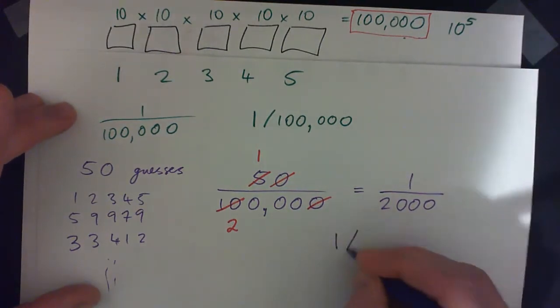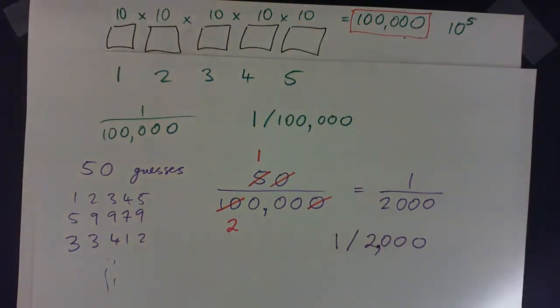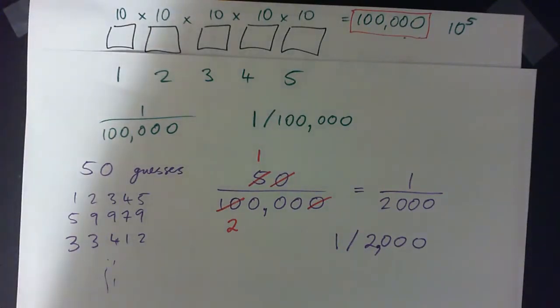And Canvas likes it when you go 1 over 2,000. Just type your answer as a fraction. You might want to put a comma in for that as well if you want to. So that's the answer, 1 in 2,000.